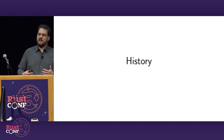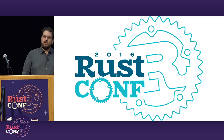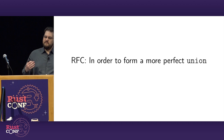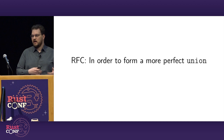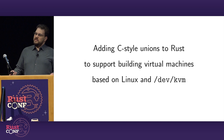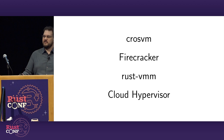I first got involved with Rust a while before the first RustConf here in Portland three years ago, and I gave a talk at that first RustConf called 'In Order to Form a More Perfect Union,' because I'd been working on C-style unions for Rust. I got those contributed as part of an RFC so that I could support building virtual machines based on Linux and the KVM interface. It did eventually get merged and released, and there are now many virtual machines based on Rust.